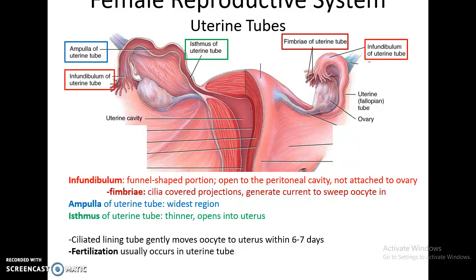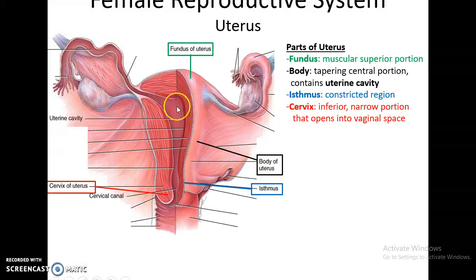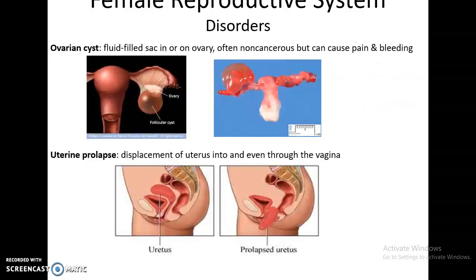Fertilization usually occurs in the uterine tube, and it takes days for the oocyte to travel to the uterus. The uterus is a muscular organ shaped like a pear. The large muscular area at the top is called the fundus. The body tapers down and includes the uterine cavity where the embryo can embed and develop. There is a slight constriction called the isthmus, followed by the cervix, which is the inferior portion of the uterus that opens into the vaginal space. The uterus is held in position by several ligaments: the broad ligament, uterosacral ligaments, cardinal ligaments, and round ligaments extending to the labia majora.